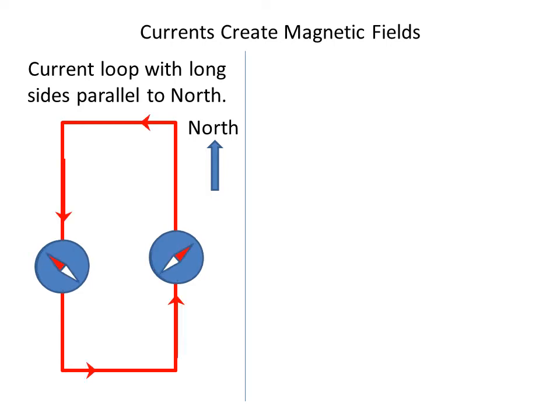When we turn on the current we see that the needles of the compasses are deflected. The one on the right points to the right. The one on the left points to the left. The difference between the two is that on one side the current is flowing north whereas on the other side the current is flowing south.